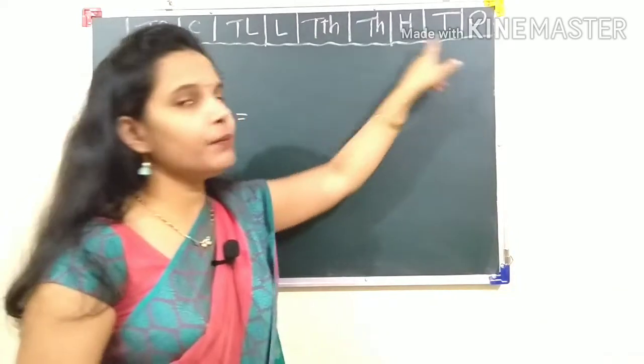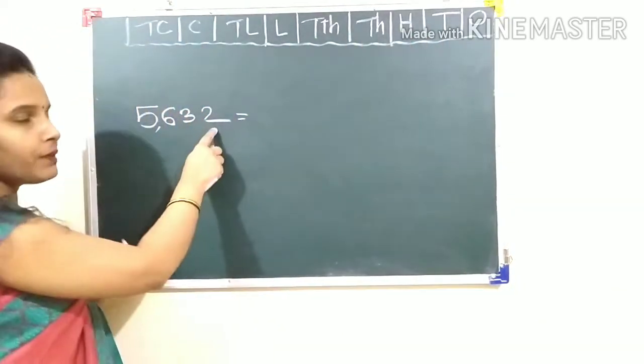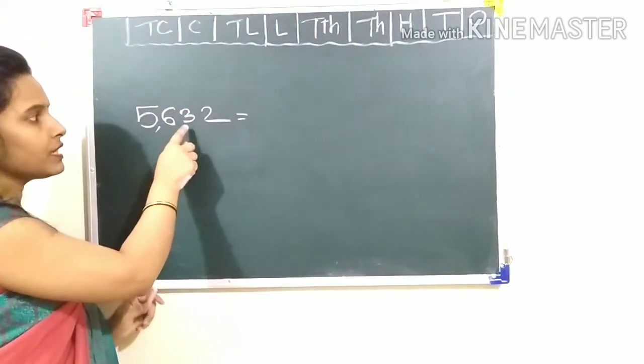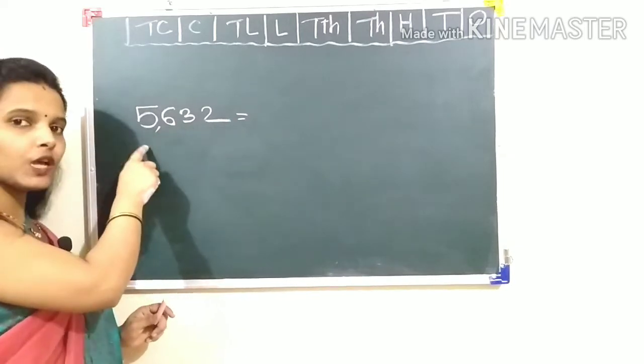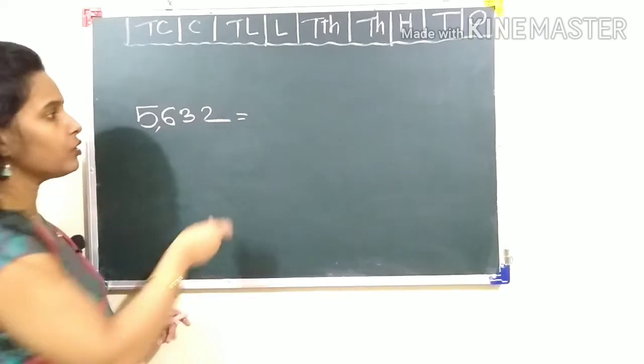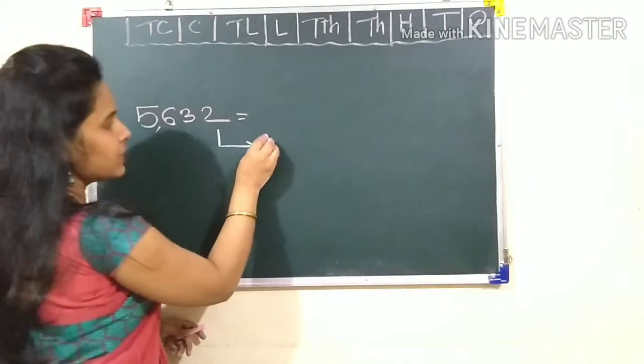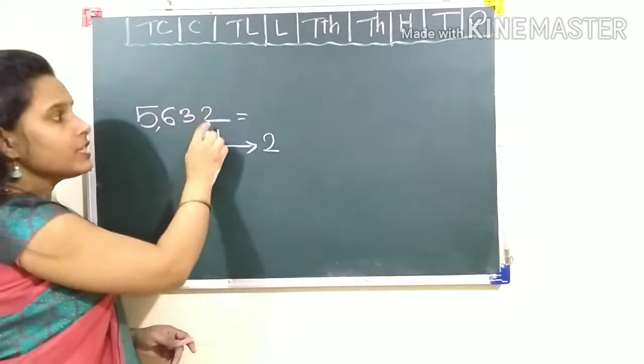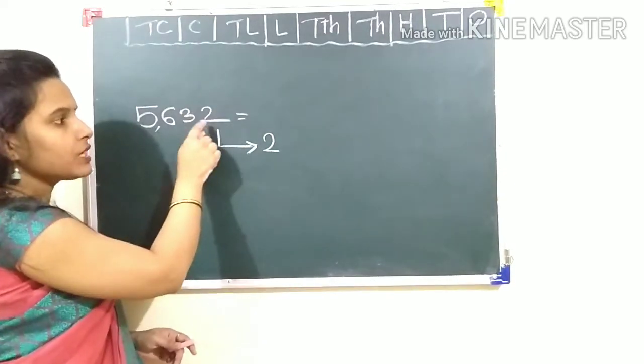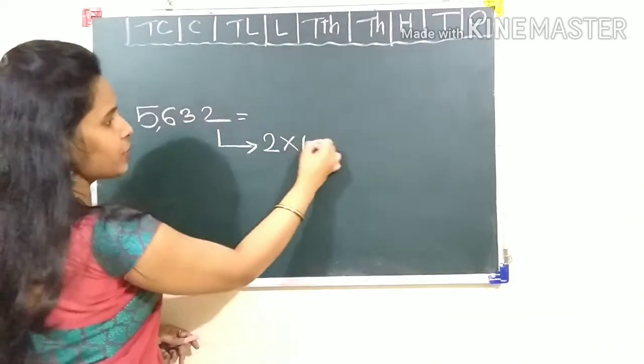Here I have written place name. So which place can you learn? This is the one's place, tens place, hundred and thousand. So let's write place value again so that you can understand the expanded notation properly. The place value of this digit 2 is 2.